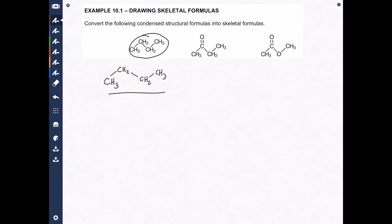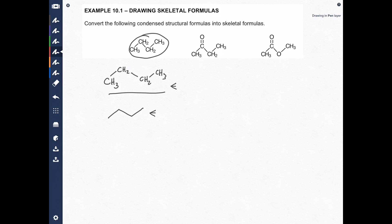So let me draw the answer. There we go — that is the answer; this is the skeletal formula. Now let's explain how we get there. The first rule for skeletal formulas is that wherever a line terminates — such as here and here — that must be a carbon. So this is a carbon and this is a carbon because the lines stop there.